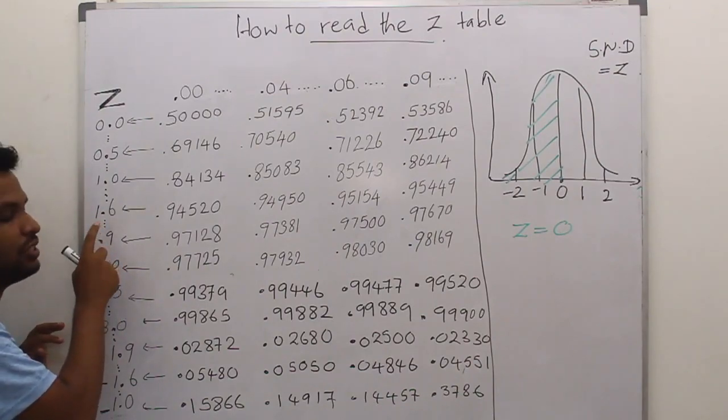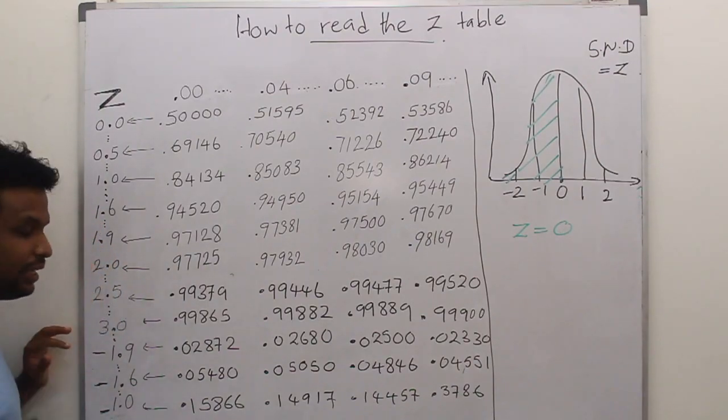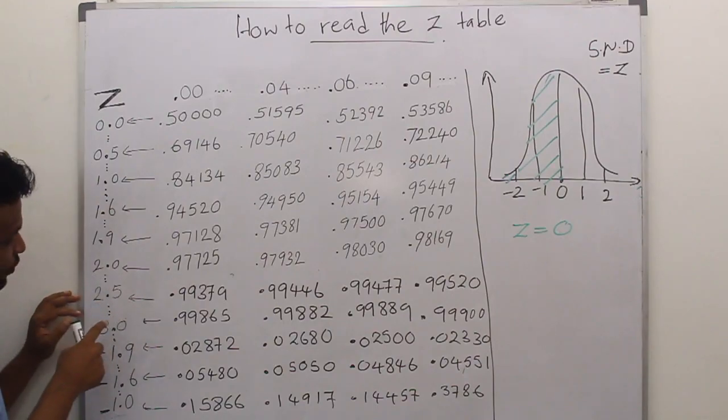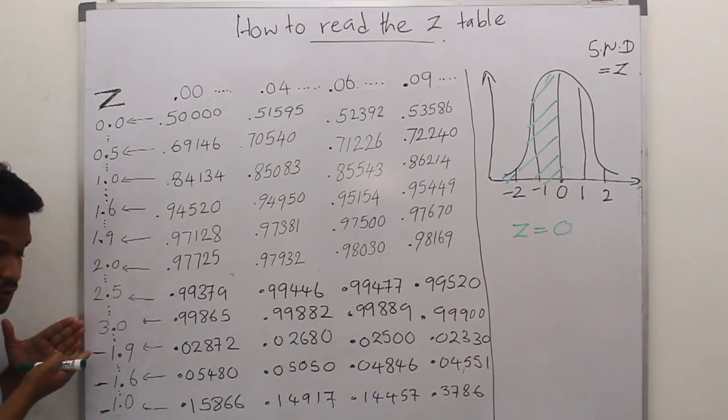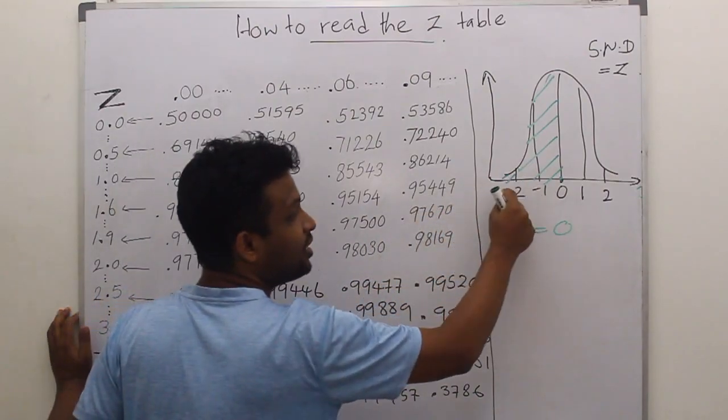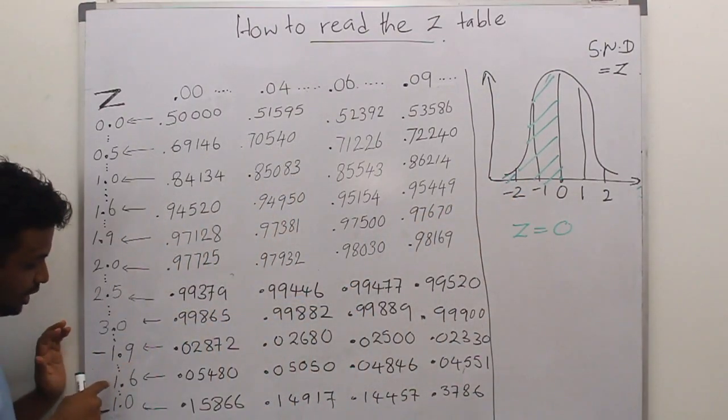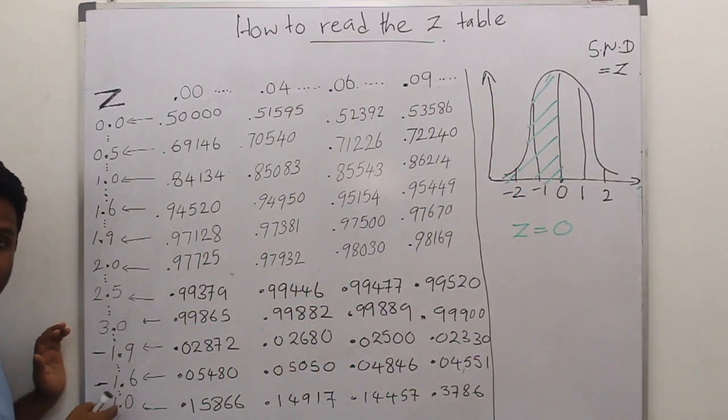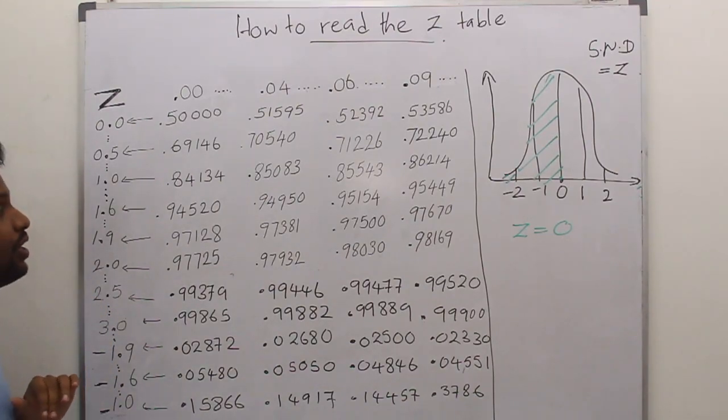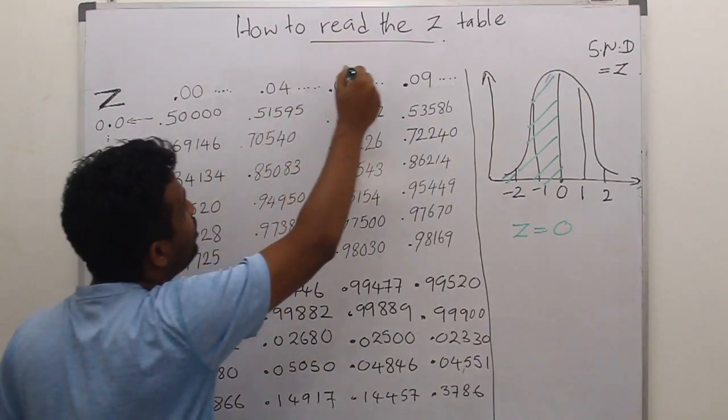And 2, 2.5, 3. And we have the minus values as well, because we are interested in minus values also. Minus 1.9, minus 1.6, minus 1, all the minus values are there. And also, we have the Z values in the first row as well.